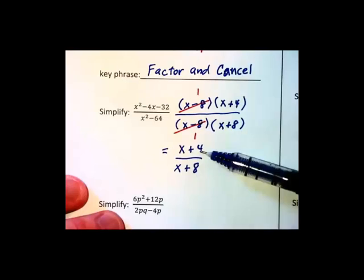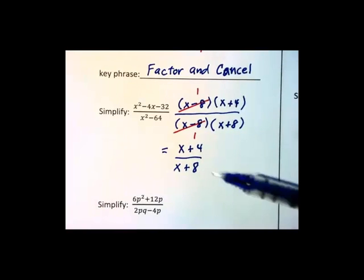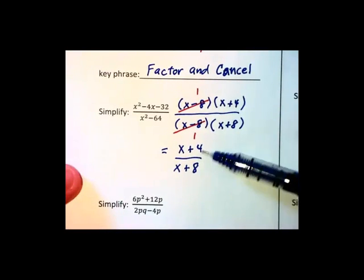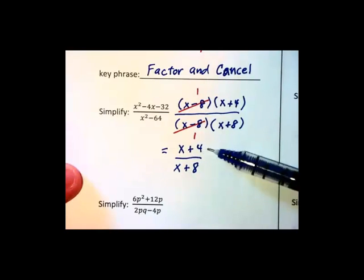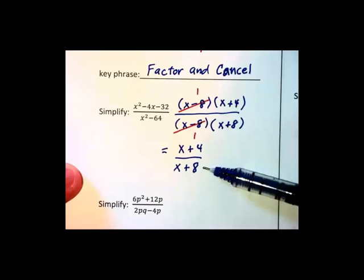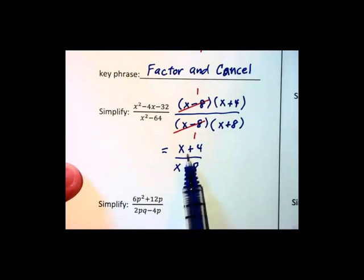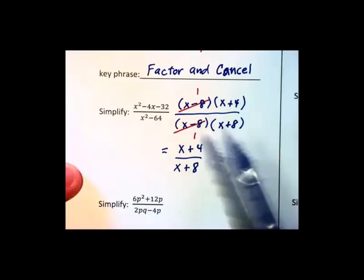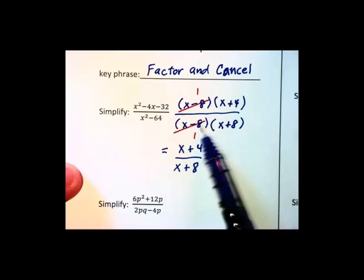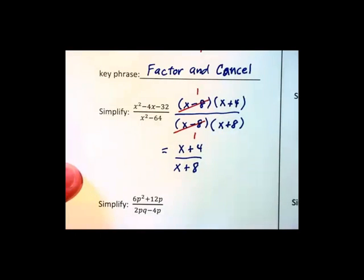Do not attempt to cancel the 4 with the 8, because 4 is not a factor that can be divided out of both the numerator and the denominator. When you've got plus or minus signs in the middle of your numerator and denominator, that messes up, so to speak, cancellation. You can only cancel when you've got multiplication in both the numerator and denominator. That's your key phrase here.